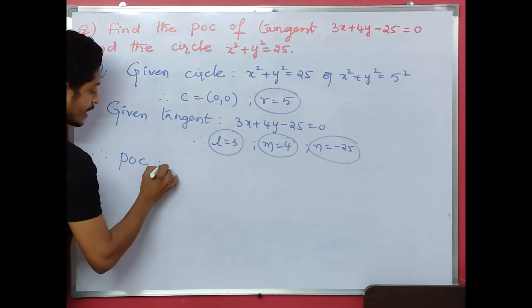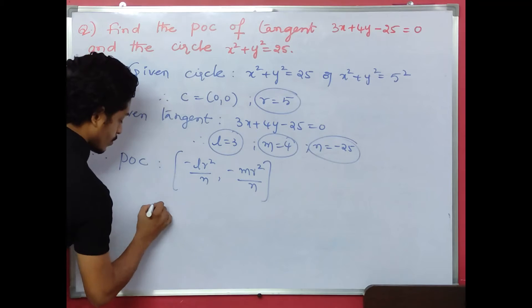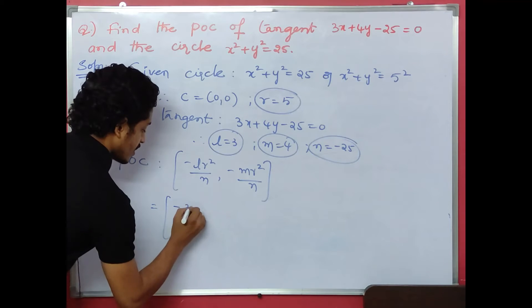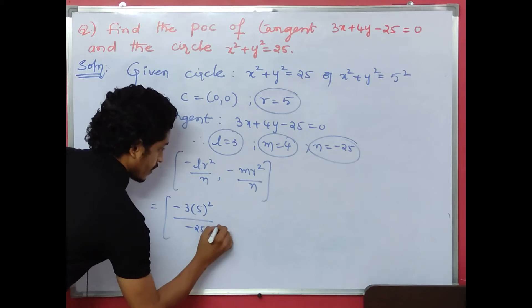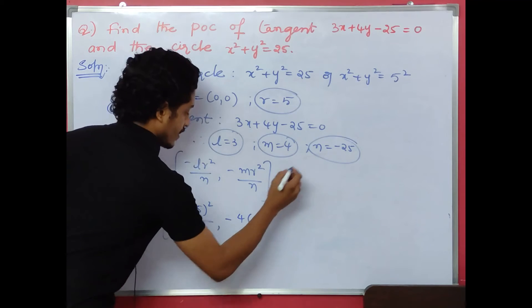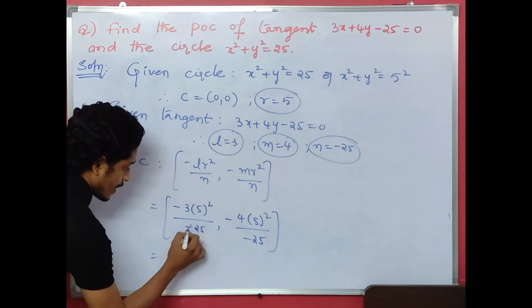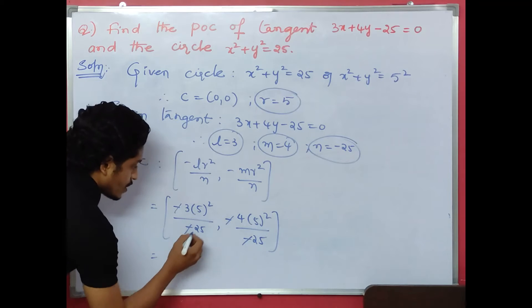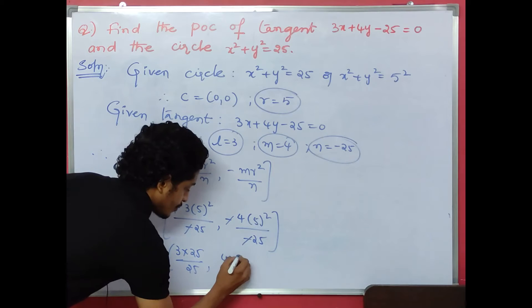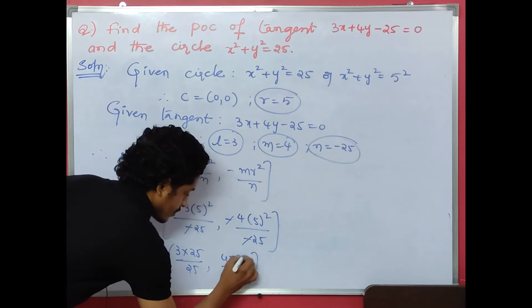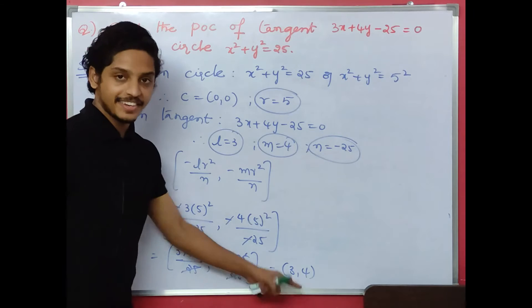Applying the point of contact formula: minus lr squared by n comma minus mr squared by n. That gives minus 3 into 25 divided by minus 25, comma minus 4 into 25 divided by minus 25. The minus signs cancel, 25 over 25 cancels, giving the answer 3 comma 4.